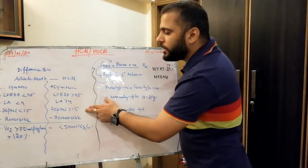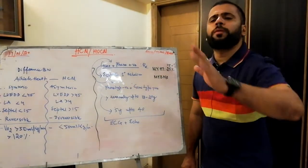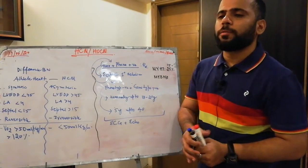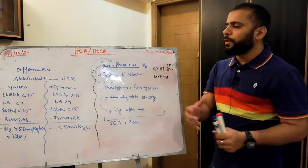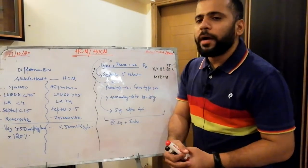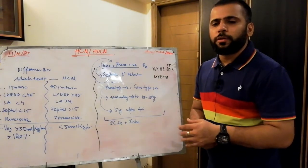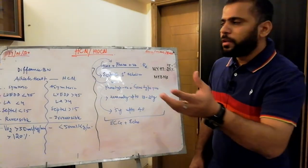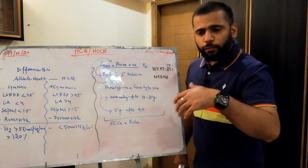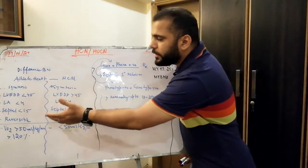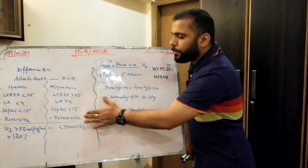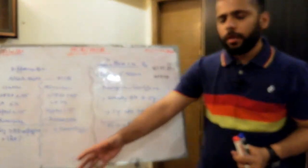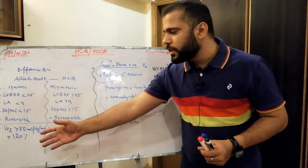When you are confused between athlete's heart and HCM because your patient is an athlete with apparent hypertrophy, advise the patient to stop athletic activities. Within six months, if the hypertrophy resolves, it was athlete's heart — because athlete's heart hypertrophy is reversible. Hypertrophic cardiomyopathy hypertrophy is not reversible.